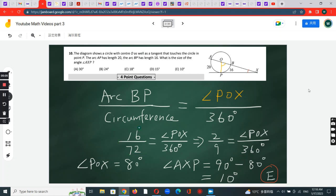This equals angle POX over 360 degrees. You simplify this fraction, and it becomes 2 over 9.